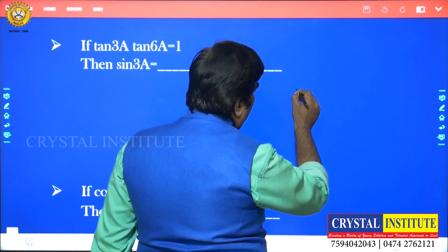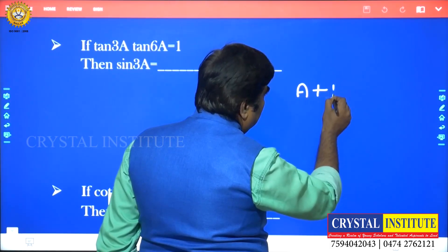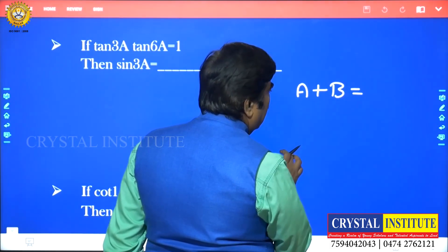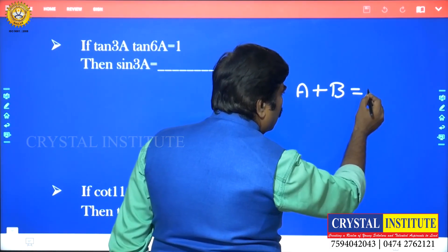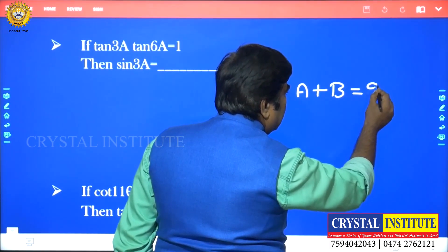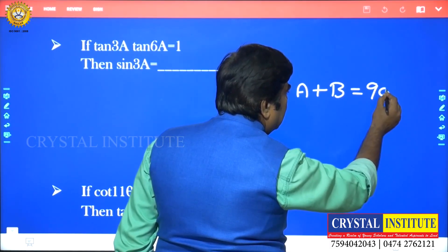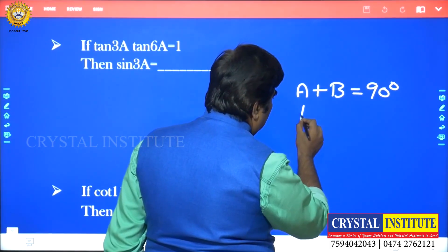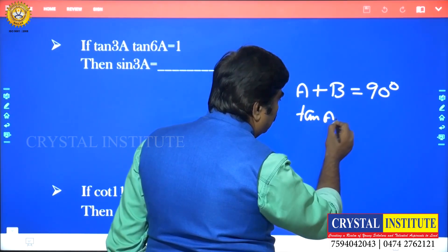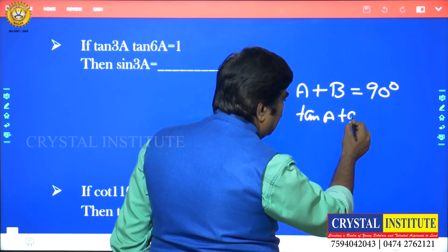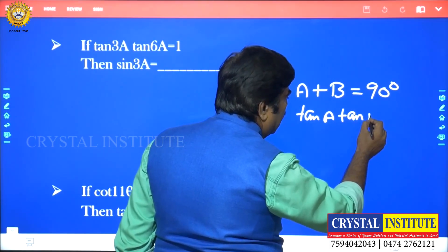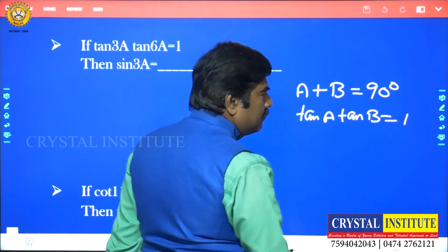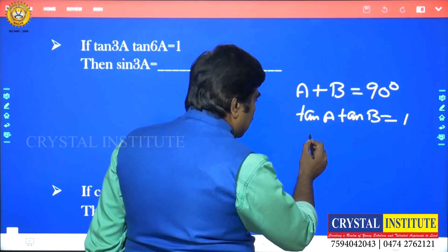The key property here: if A + B = 90°, then tan A · tan B = 1. That is the complementary angle relationship — tan A · tan B = 1 implies A + B = 90°.